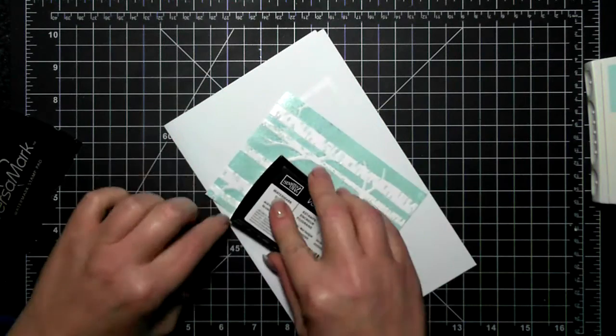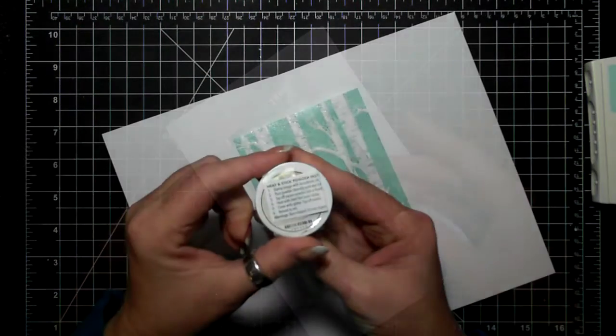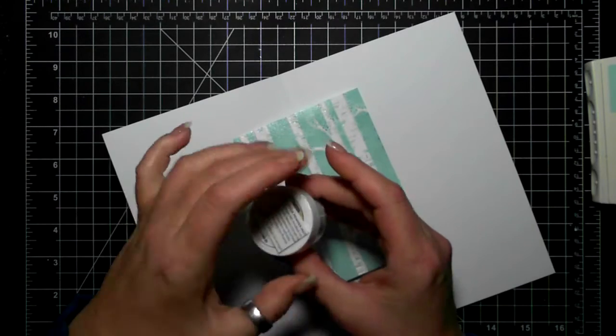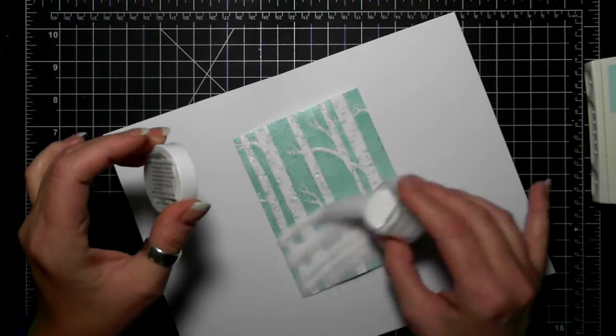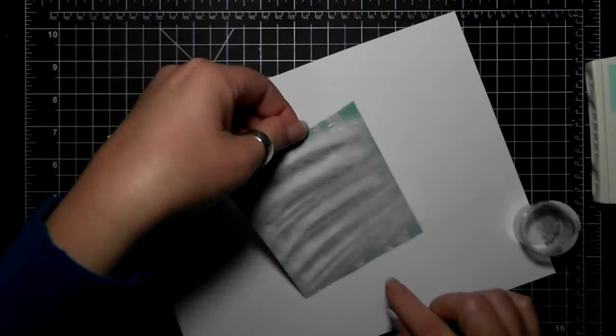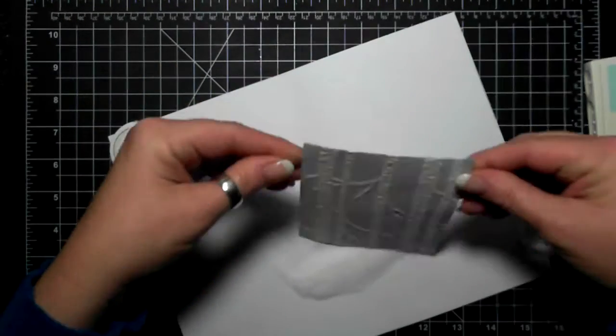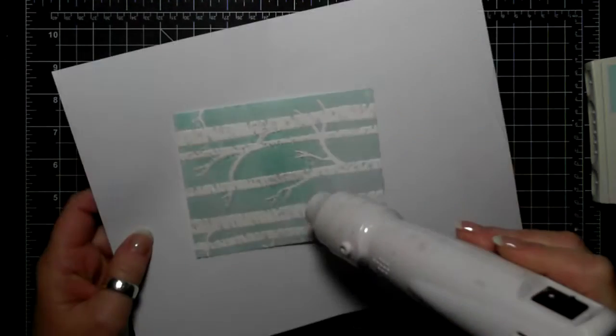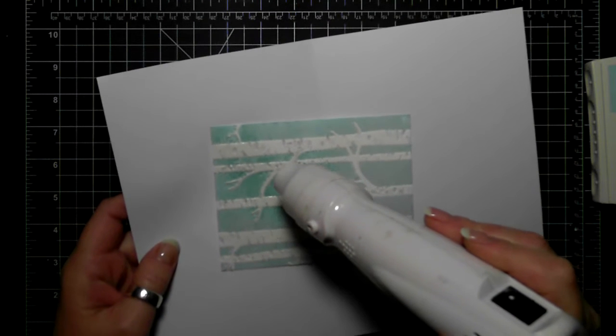So I'm using Versamark ink pad and I'm smushing the Versamark all over the card front, and then I'm using my heat and stick powder. This is like an embossing powder, it's just powdered glue really, and it is quite awesome.